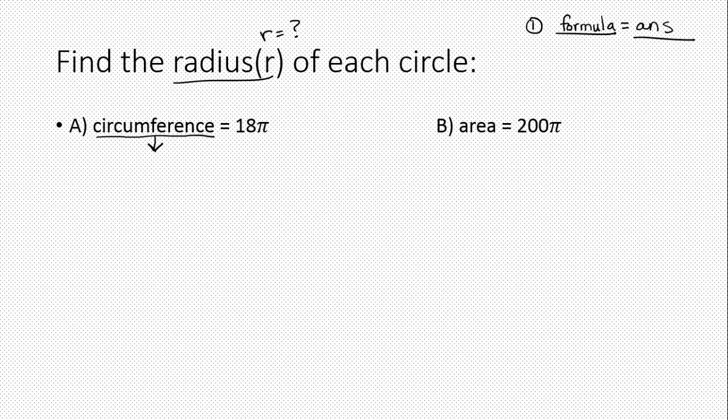Circumference formula is pi times diameter or 2 times pi times R. In this case, I'm going to use R because that's what's missing. If the diameter was missing, I would use D times pi. And then set that equal to the answer. So that's equal to 18π, and that's what I mean. This is the answer. You know the circumference, and that's the answer. This one is the formula side.